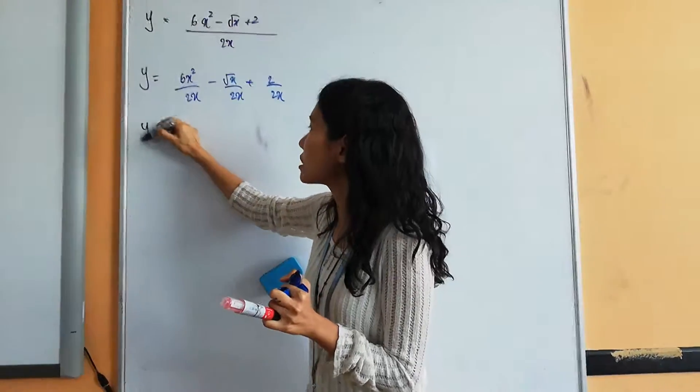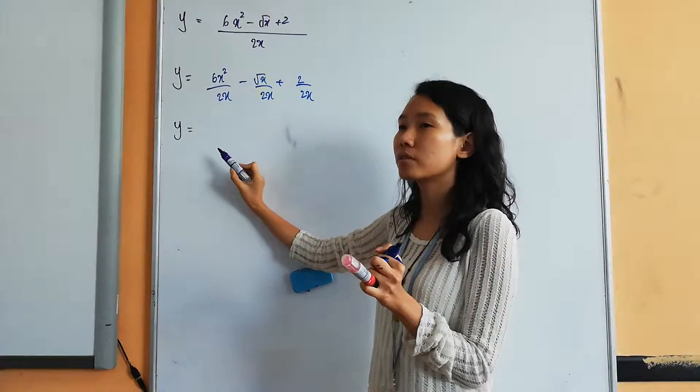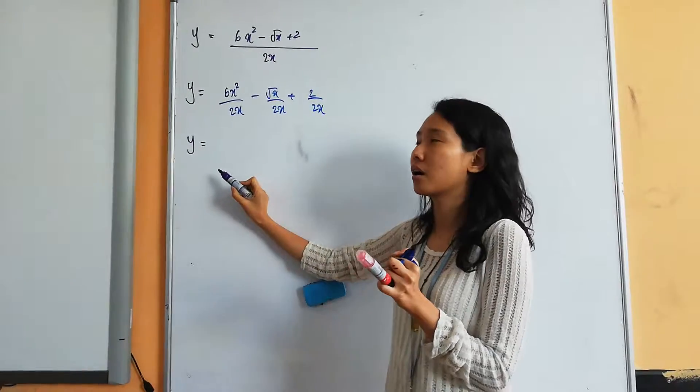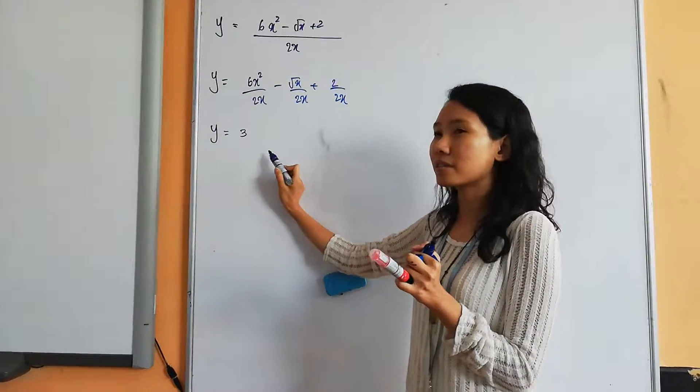So, now only we simplify. 6 divided by 2, 3. x squared divided by x, x.